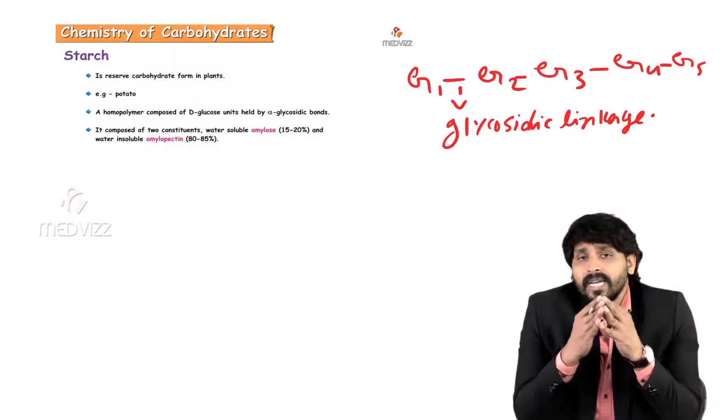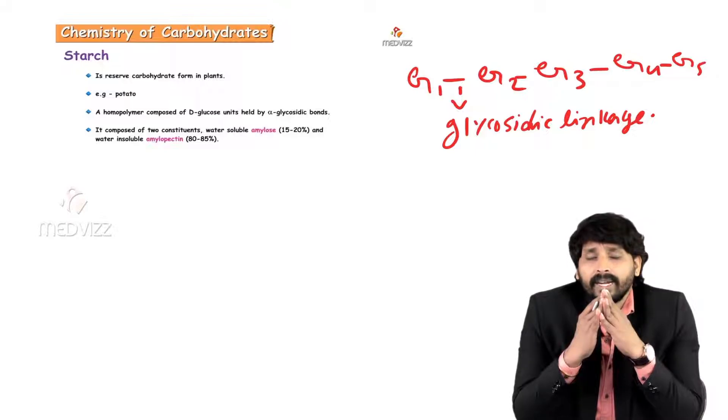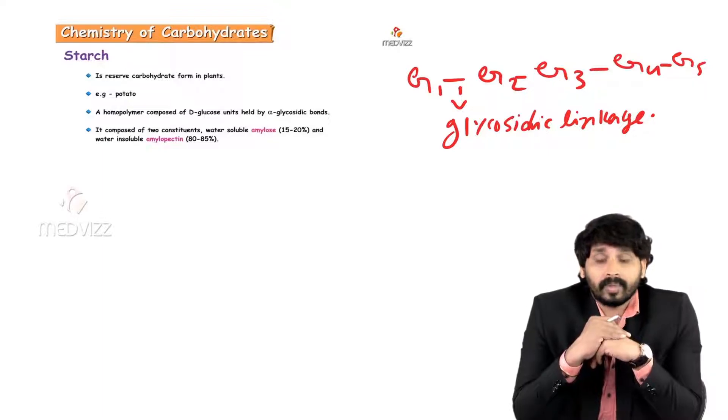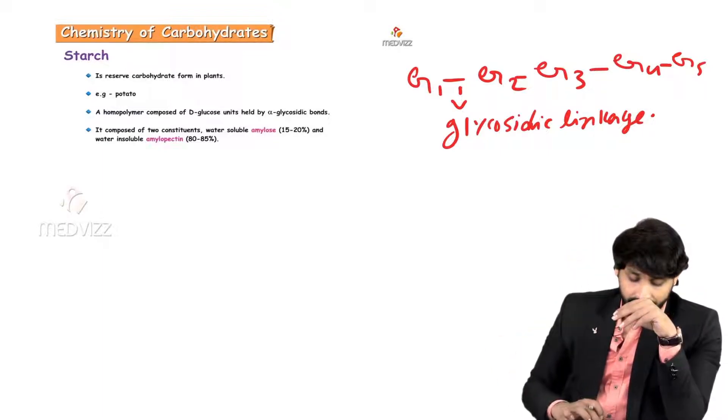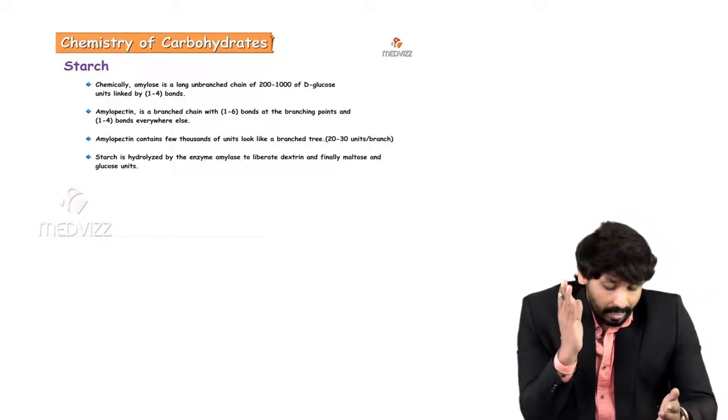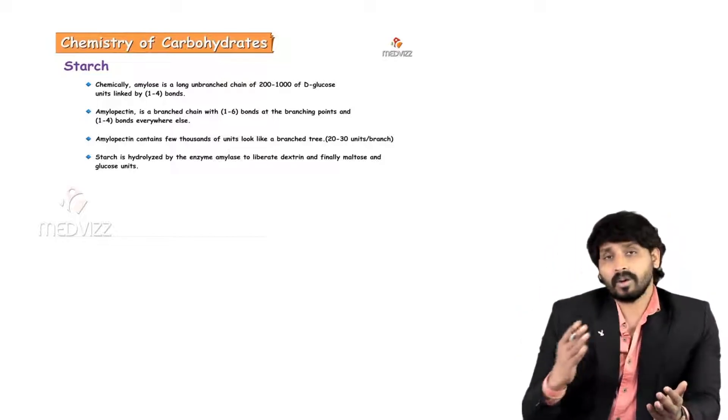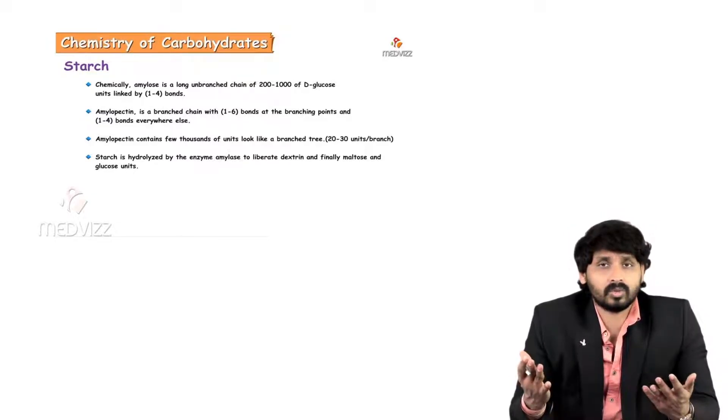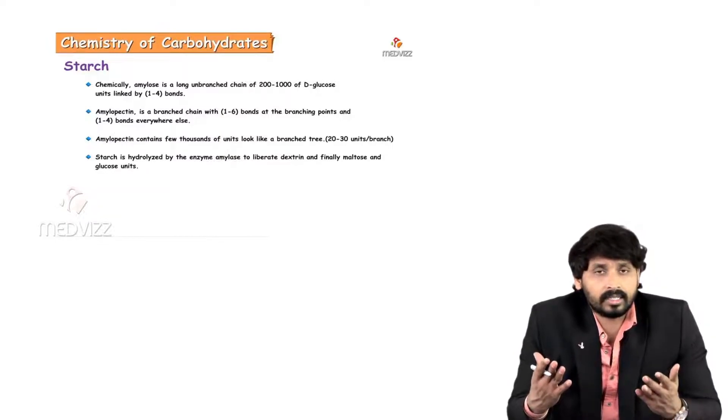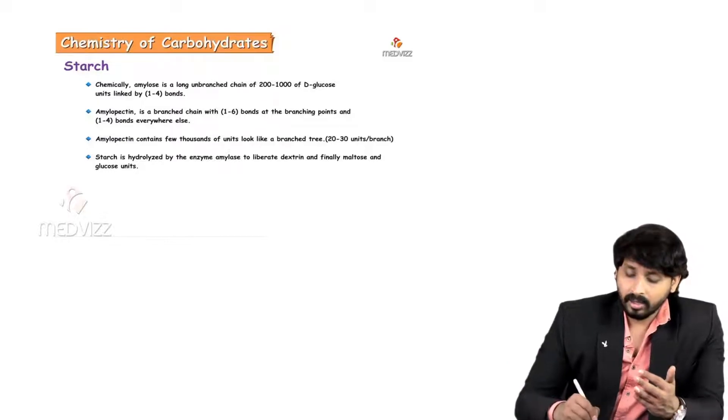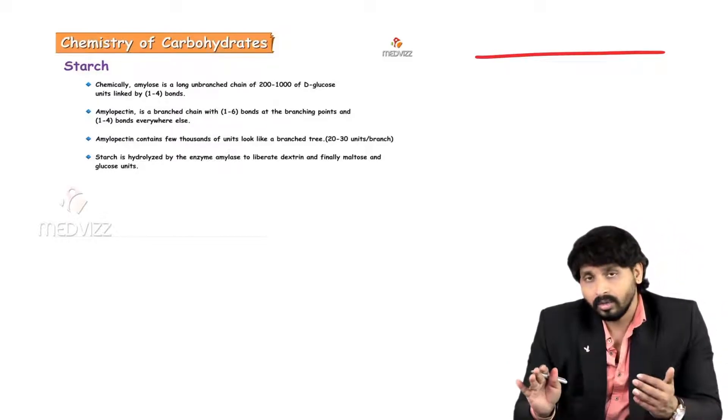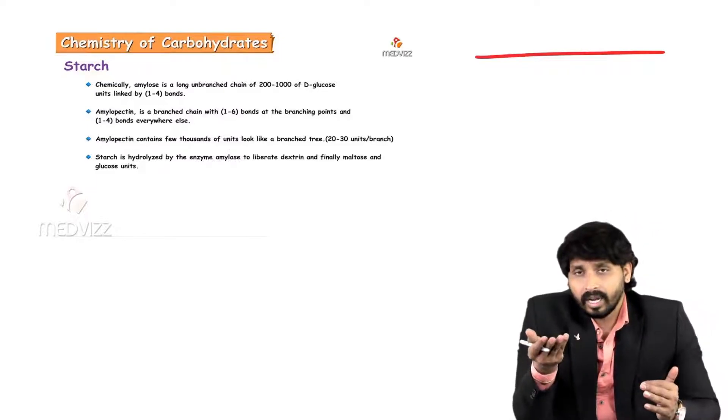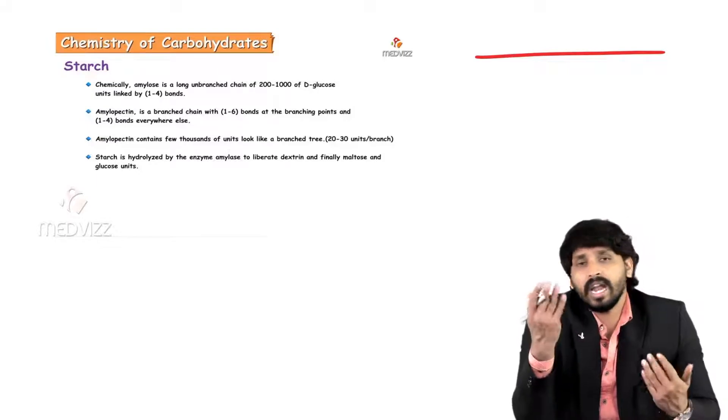Starch majorly comprised of two major units: amylose and amylopectin. Amylose is water soluble compared to amylopectin. Because amylopectin, because of branching, is more like water insoluble. Amylose is chemically a long unbranched chain. In starch, few of the chains will be linear, few of the chains will be branched. Amylose is a straight chain, linear one, which accounts for 15 to 20% of the starch. Larger extent contribution by amylopectin, which is 80 to 85%.